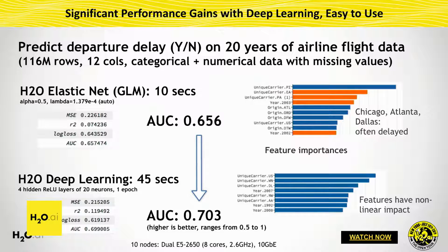For regular datasets like the airline dataset, you can build a GLM model in 10 seconds on 100 million rows on a 10-node cluster, or build a deep learning model in less than a minute on the whole 100 million row dataset. It's super fast. You get a boost in accuracy from 65 to 70. If you have a normal dataset without images or speech — just numbers or strings — you get real value out of deep learning. You can compare it against GBM and see which one wins.